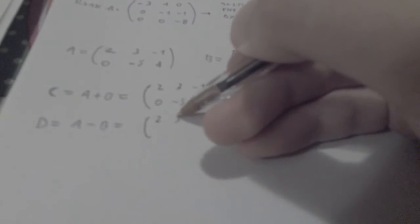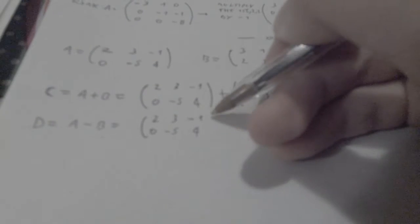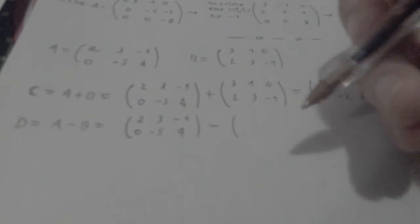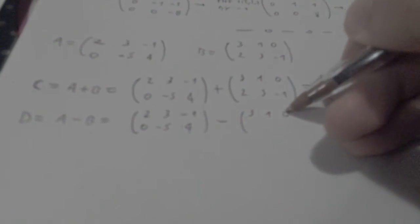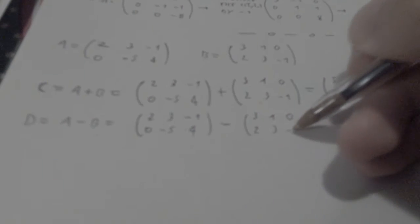It's going to be pretty much the same. So we have 2, 3, negative 1, 0, negative 5, 4, minus 3, 1, 0, 2, 3, negative 1.